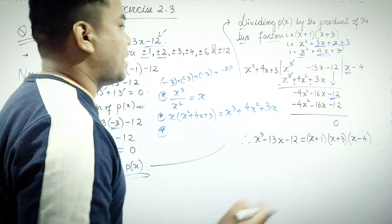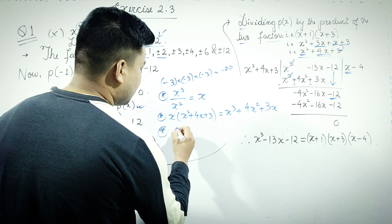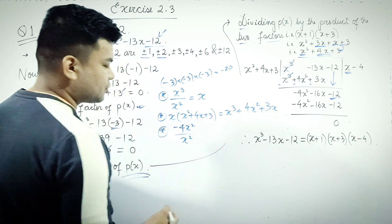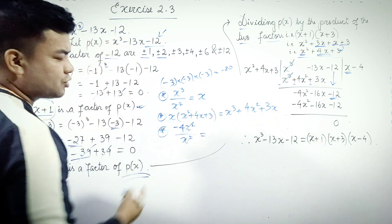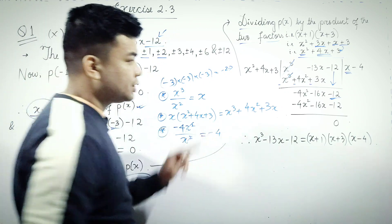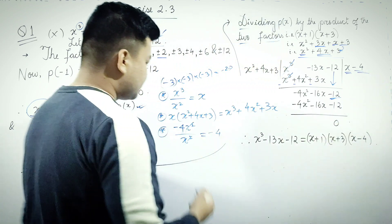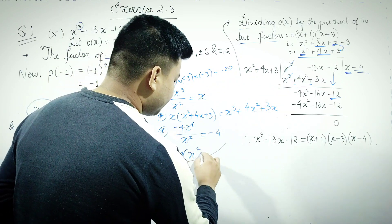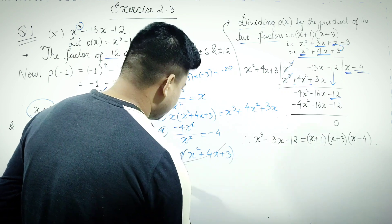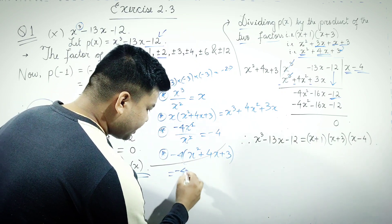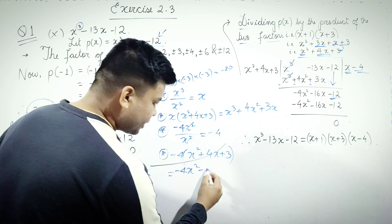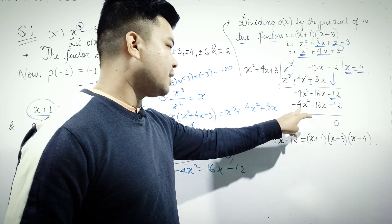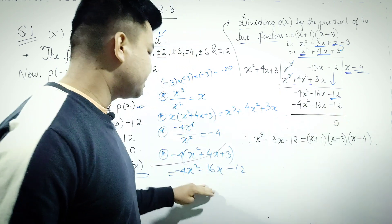We divide the dividend by the divisor step by step. We take minus 4 and multiply the divisor x squared plus 4x plus 3 by minus 4, giving minus 4x squared minus 16x minus 12. We then subtract to get the remainder.